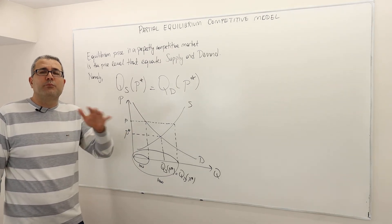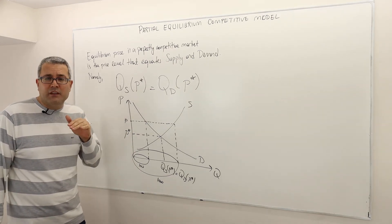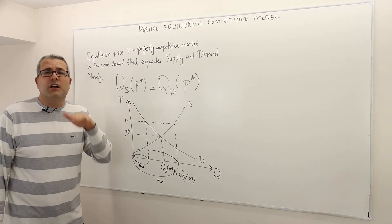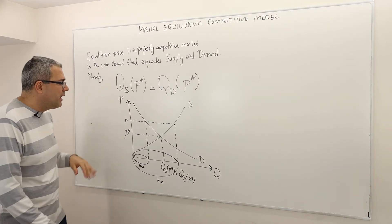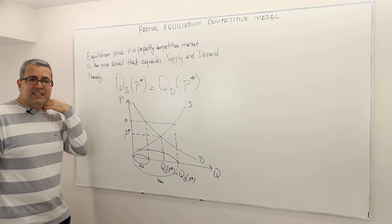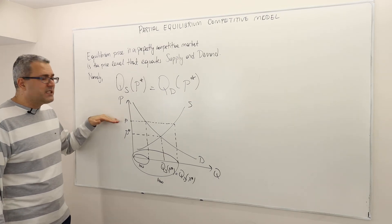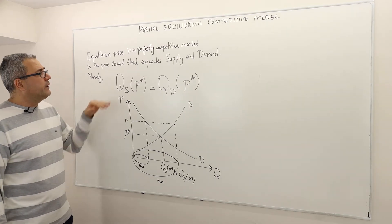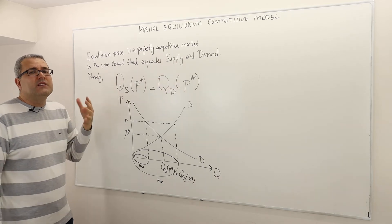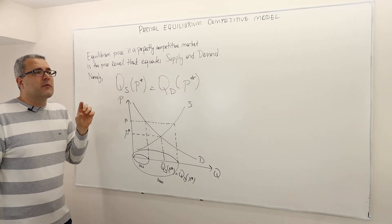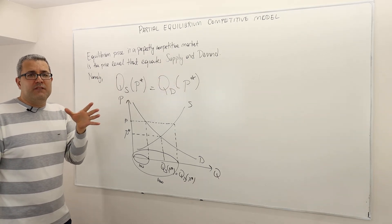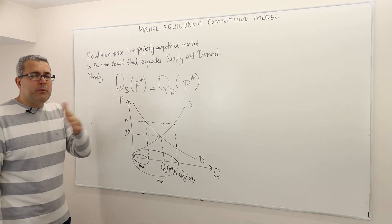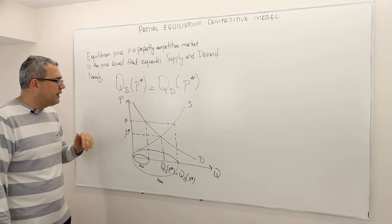So they're not going to take price P as given — they will actually want to charge less and less. The price level P is not going to be stable. Remember, the equilibrium price is a stable price level where nobody has incentive to increase it and nobody has incentive to decrease it.